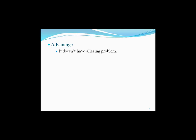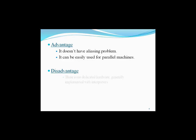The main advantage is that there is no aliasing problem in functional programming. Then, it can be used for parallel machines easily. The main disadvantage is that there is no dedicated hardware — it is generally implemented with interpreters.